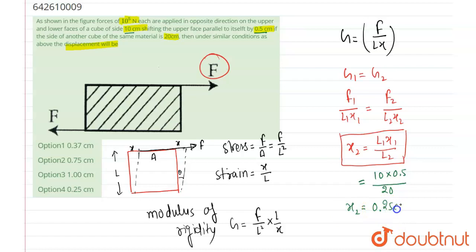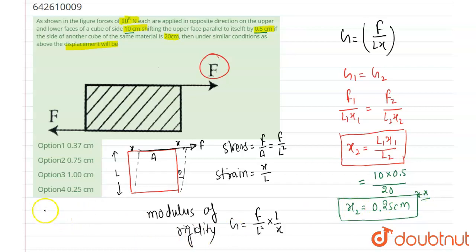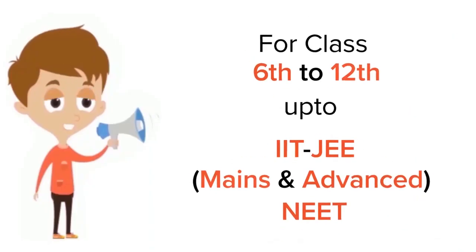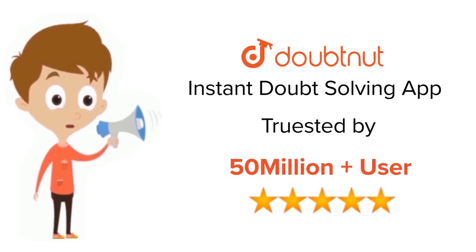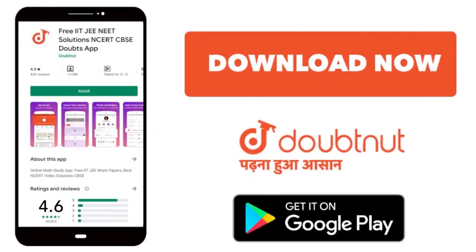The value of x2 will be 0.25 centimeters. So the correct option is 4. The extension, meaning the shifting of the face parallel to its length, will be 0.25 centimeters. For class 6 to 12, IIT-JEE and NEET level — trusted by more than 5 crore students — download the DoubtNet app.